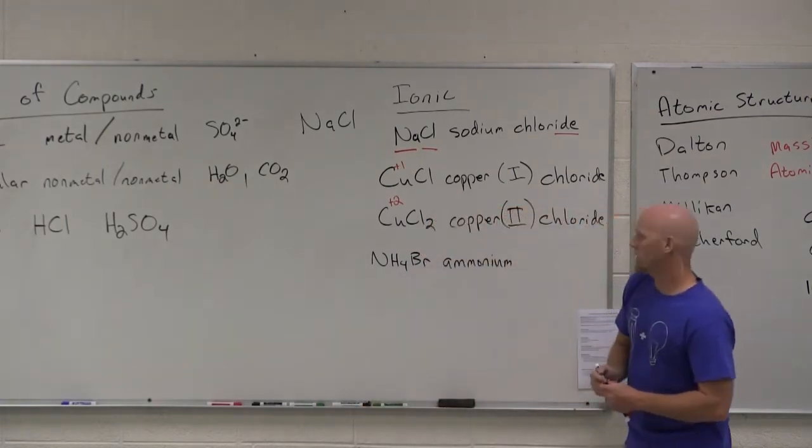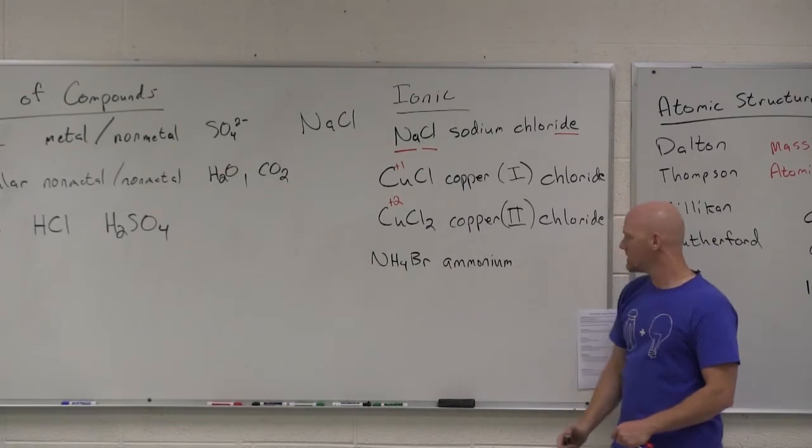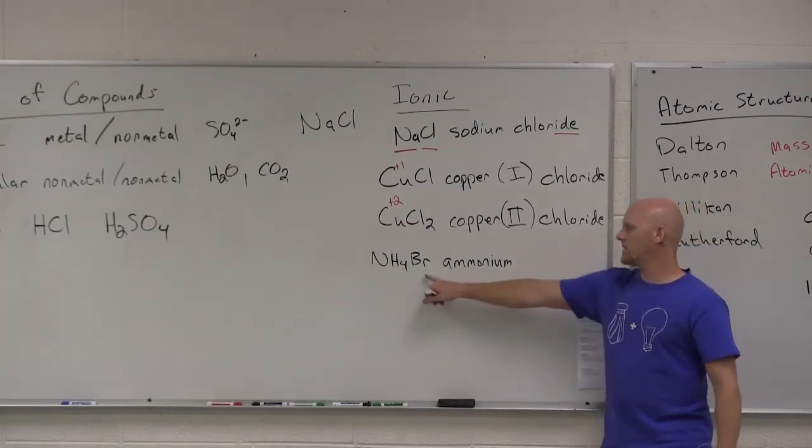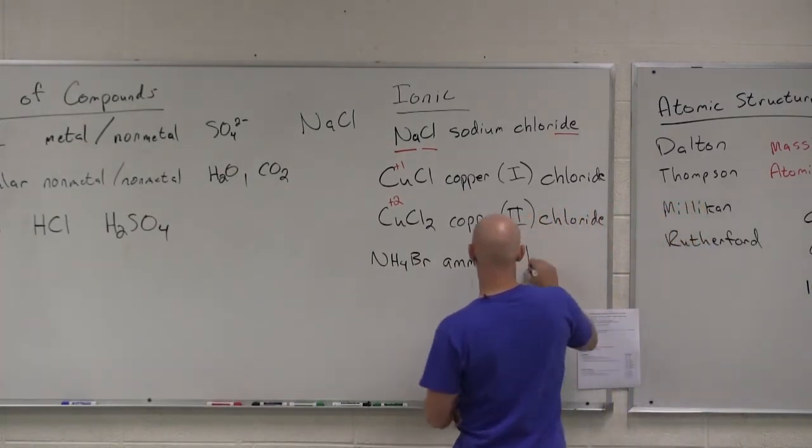So, cool. And obviously, we don't have a rule number two for polyatomic cations. So you go straight to rule number three and you name the nonmetal with an -ide ending, bromide.